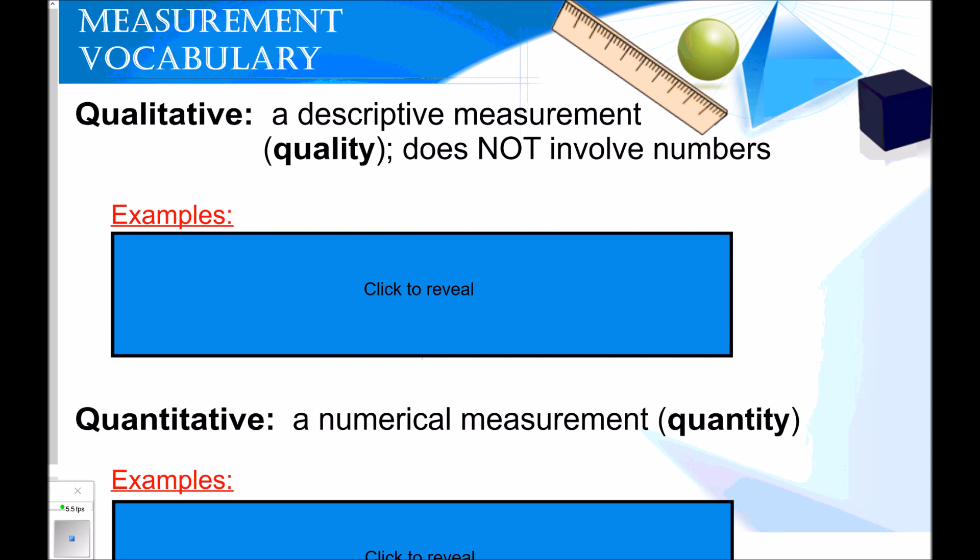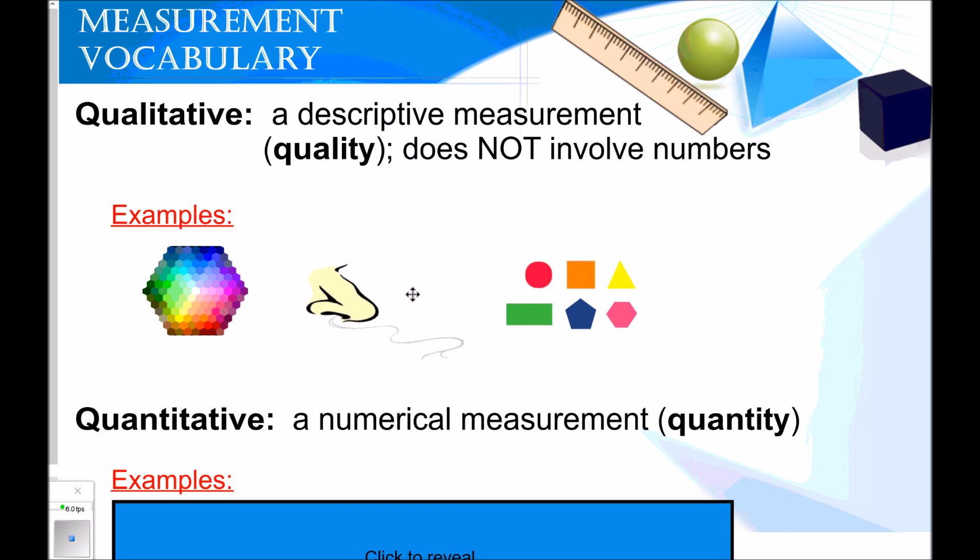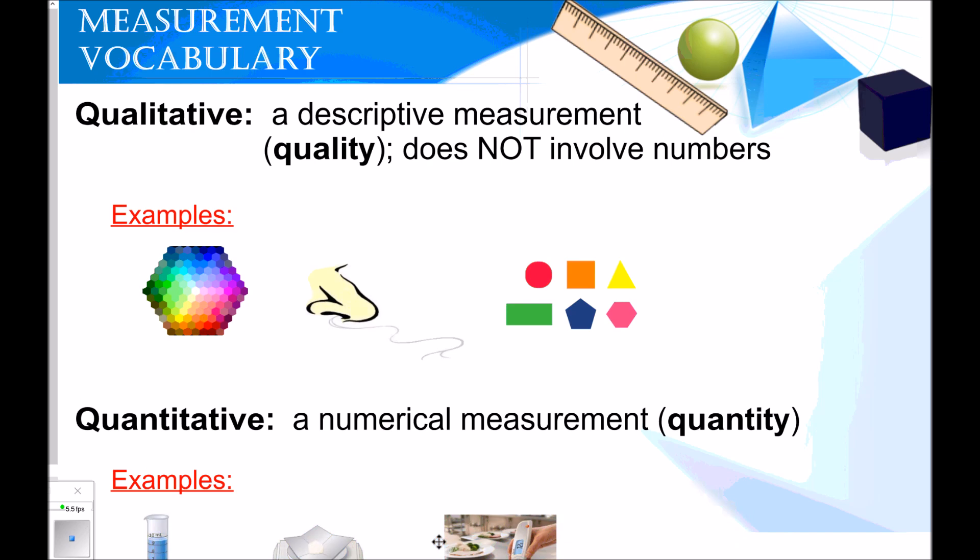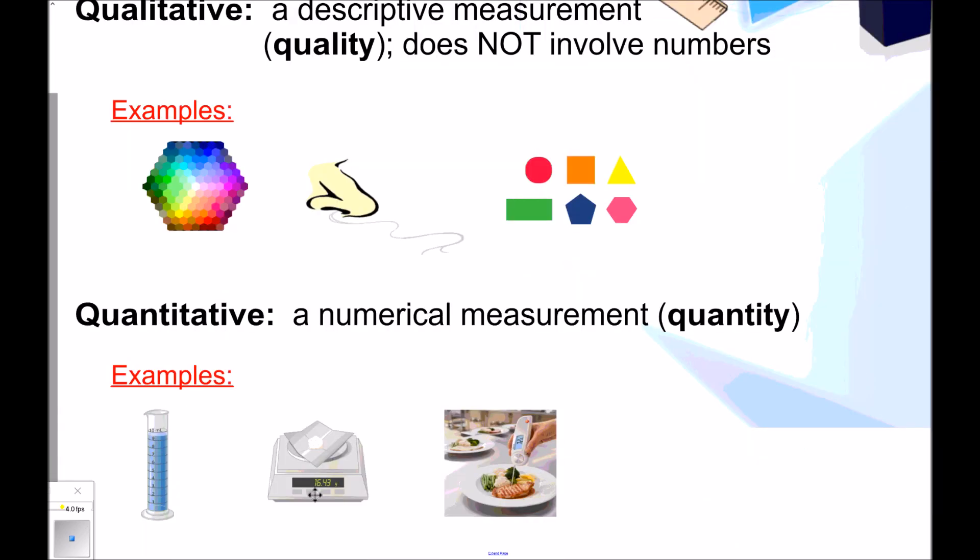More measurement vocabulary, qualitative versus quantitative. I want you to think of what the word sounds like, qualitative. It describes the quality of something, and it does not involve numbers. You would give perhaps the color, the smell, or the shape. Those are qualitative ways to describe something. Quantitatively describing something includes a numerical measurement, or quantity. Some examples of that is volume, mass, and temperature.